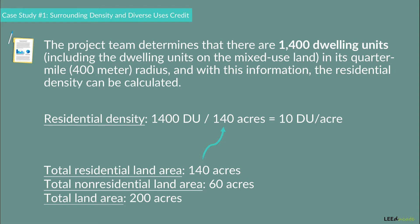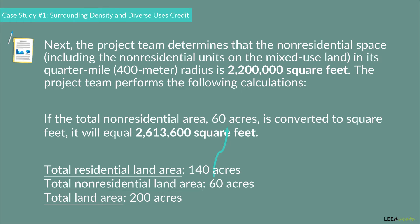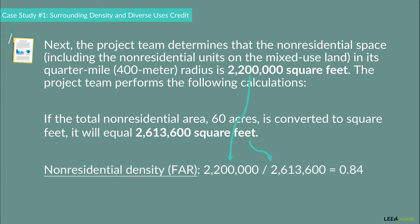Next, the project team learns that the non-residential space — including the non-residential units on the mixed-use land — in its quarter-mile radius is 2,200,000 square feet. To calculate the floor-to-area ratio, the total non-residential area of 60 acres is converted to square feet, equaling 2,613,600 square feet. The non-residential density is therefore 0.84, found by dividing 2,200,000 by 2,613,600 square feet.